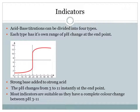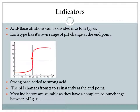Acid-base titrations can be divided into four different types, each with its own range of pH change at the end point. Looking at the first type — a strong base added to a strong acid — on the graph the y-axis shows pH from 0 to 14, and the x-axis shows the amount of base added. The pH changes instantly from 3 to 11 at the equivalence point. Most indicators are suitable for a strong acid–strong base reaction, as they have a complete color change within that pH range of 3 to 11.